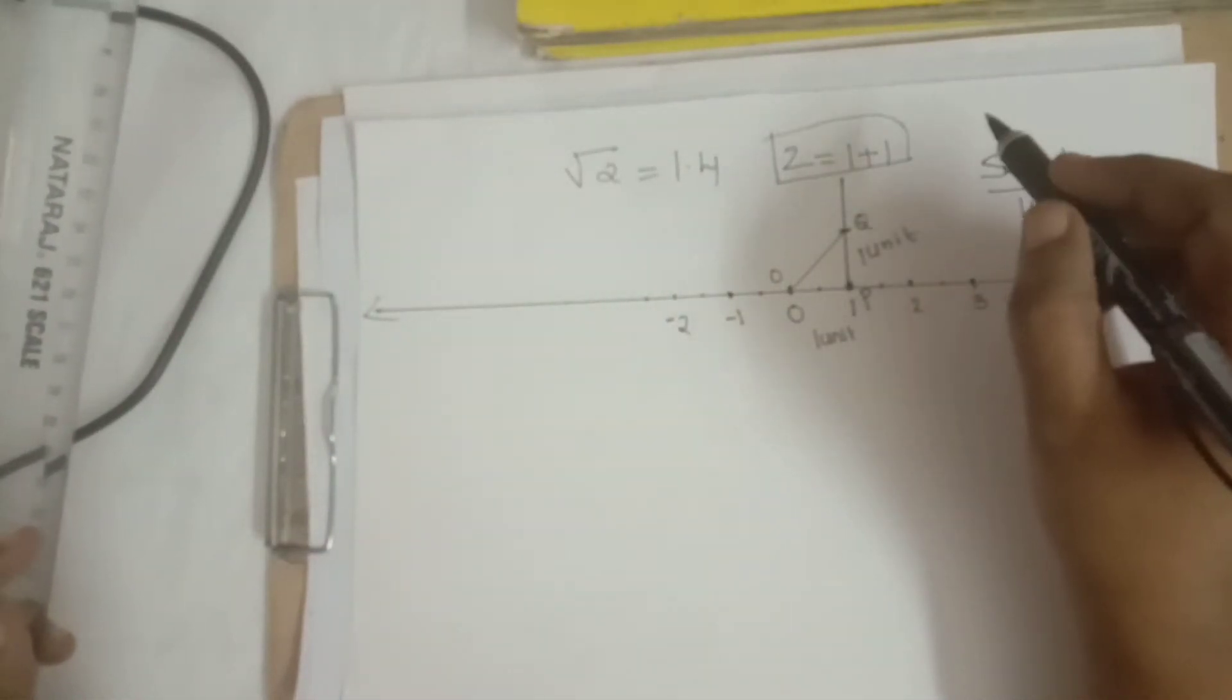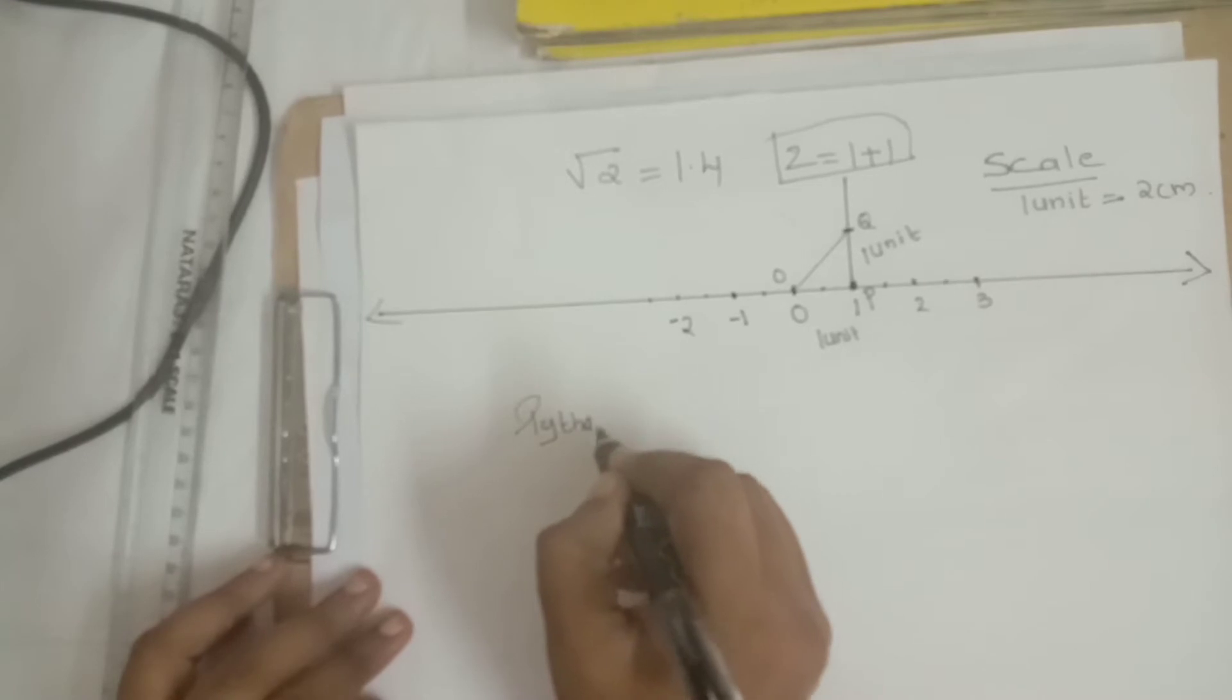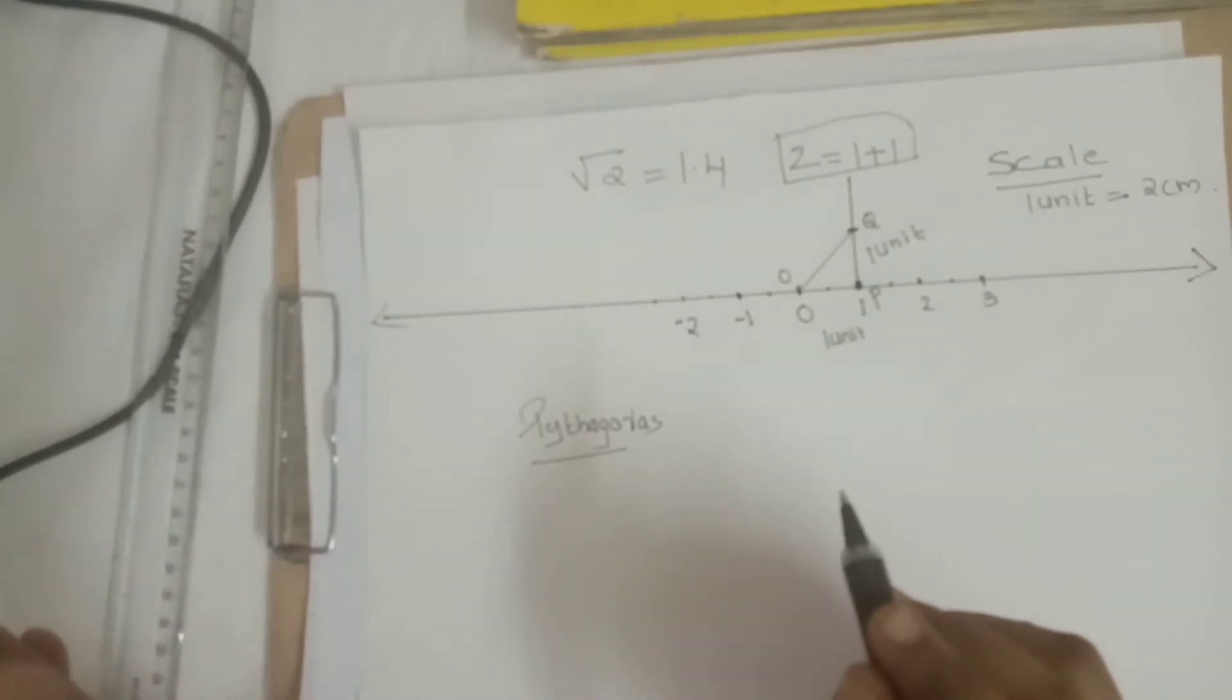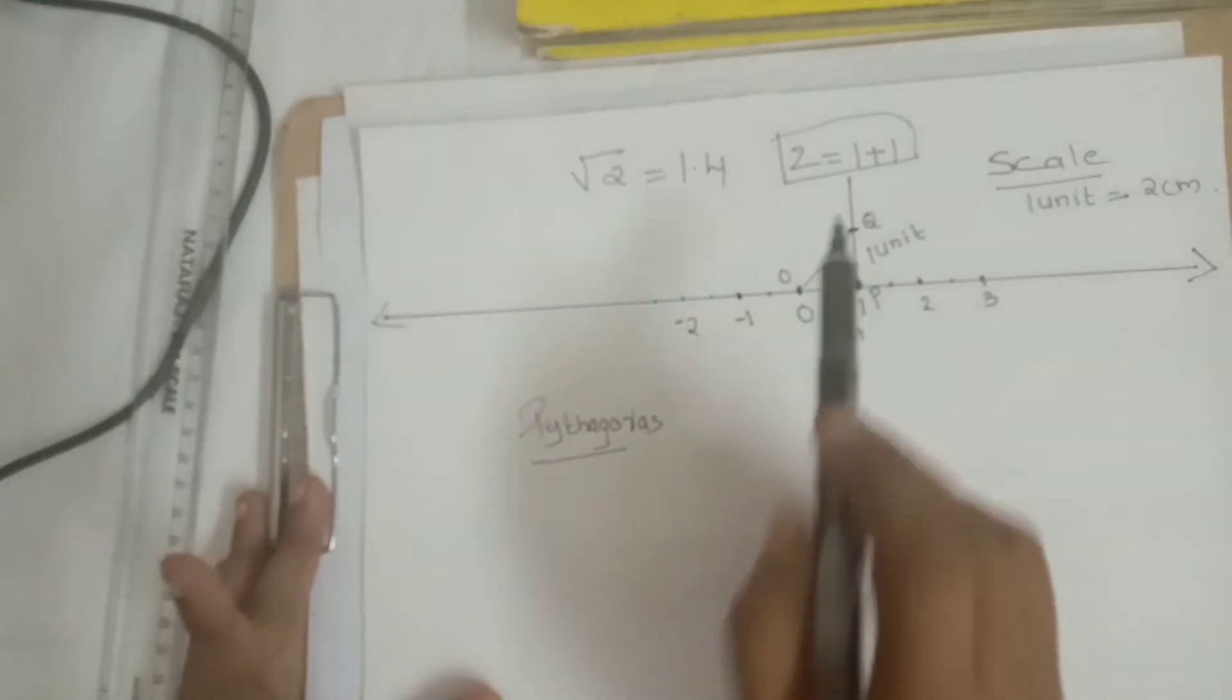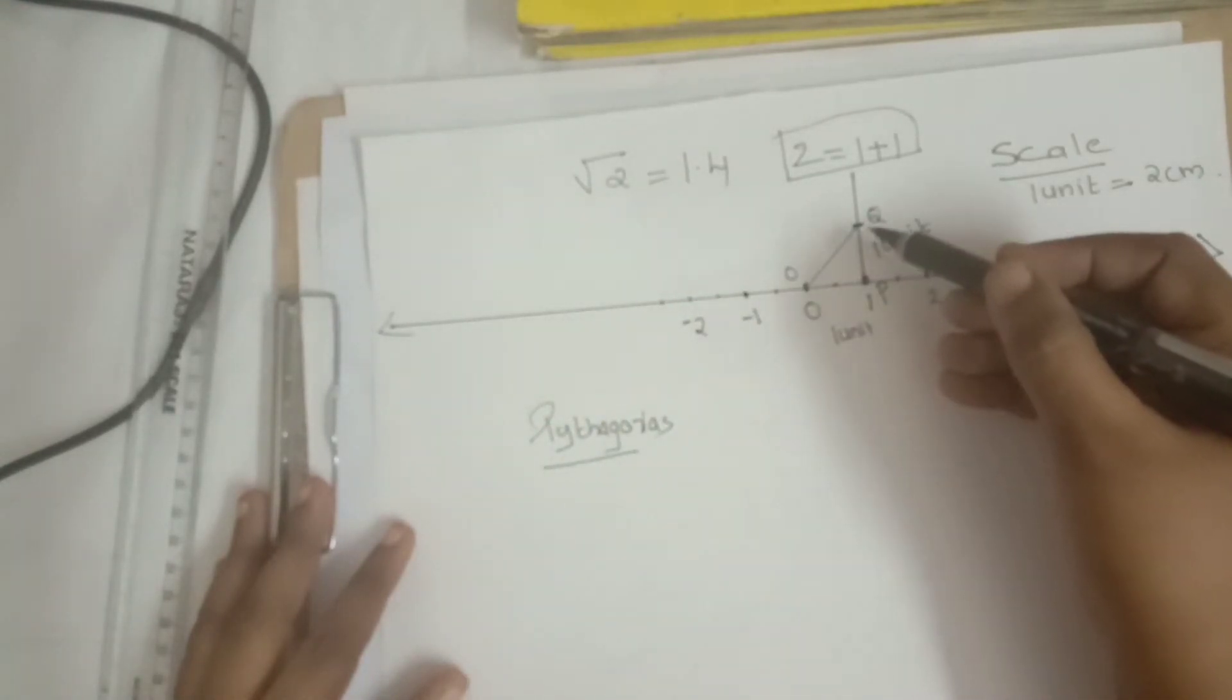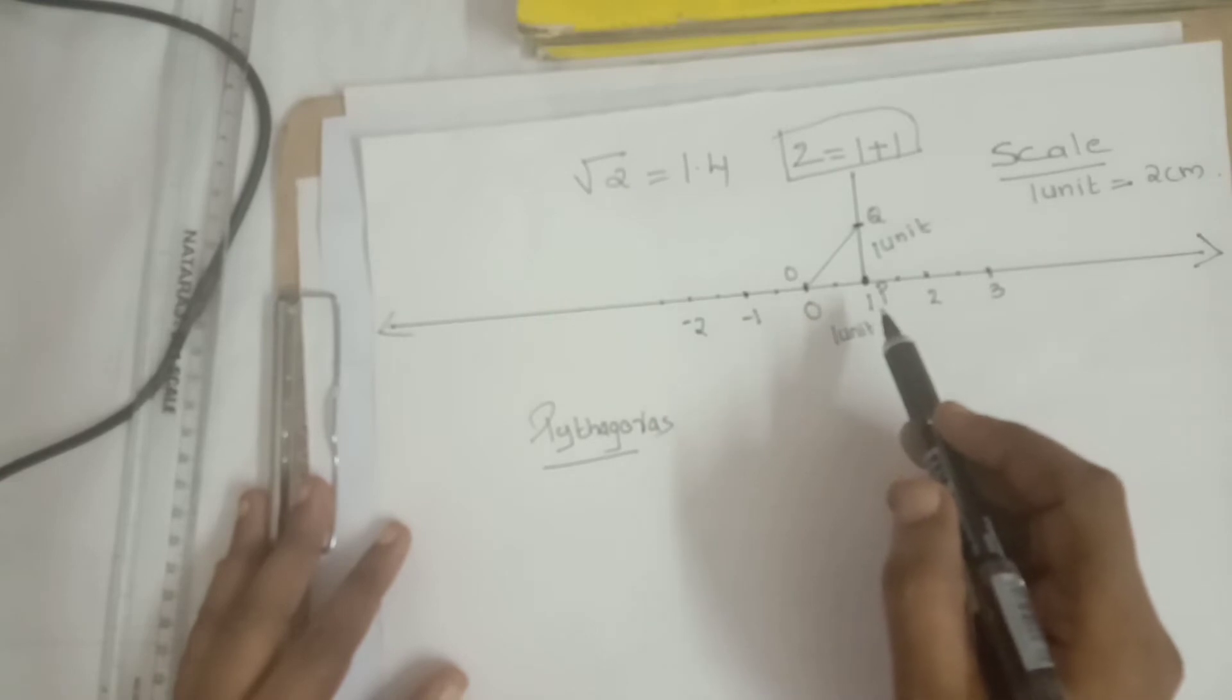How to verify? By using Pythagoras theorem we can verify. Remember, Pythagoras theorem is verified under a right angle triangle, not other triangles. Here, which is our right angle triangle? O, P, Q is our right angle triangle. So in the right angle triangle, OQ side represents the hypotenuse or the longest side of that triangle. And OP is the base side and PQ is the altitude side.